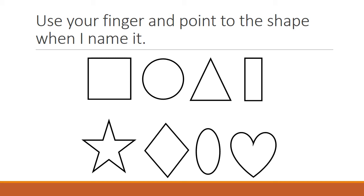Point to the heart. Now the square. Next is the oval. Can you point to the triangle? And last, point to the rhombus or the diamond.